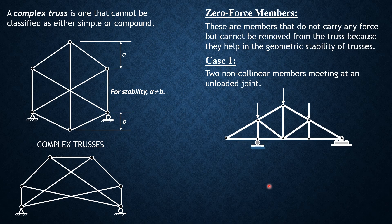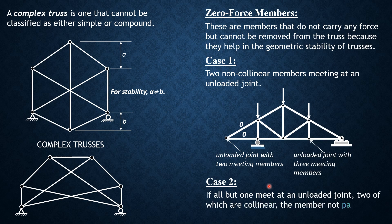Case two: if all but one meet at an unloaded joint, two of which are collinear, the member not parallel to the collinear members is a zero-force member, or the member whose line of action is unique carries no force. If you use these two are collinear, therefore this member is unique. If you concentrate on this joint here, summation forces vertical is zero, then obviously this is zero because that's already vertical and you have nothing to add because this is unloaded. That's why it is a zero-force member.